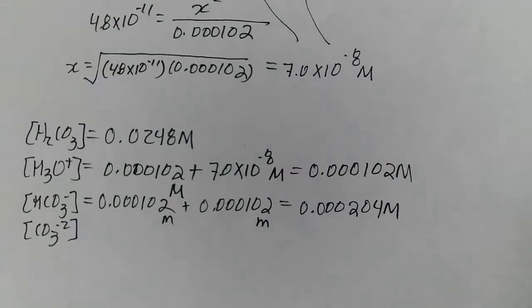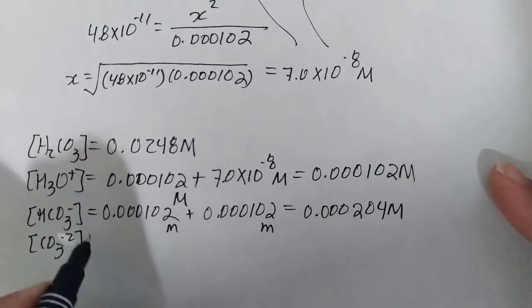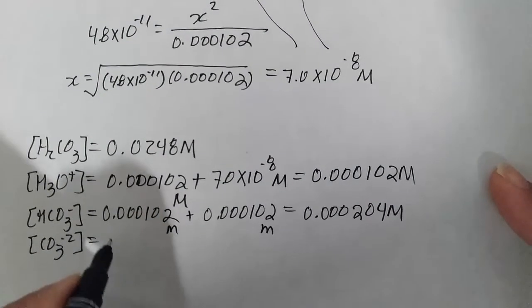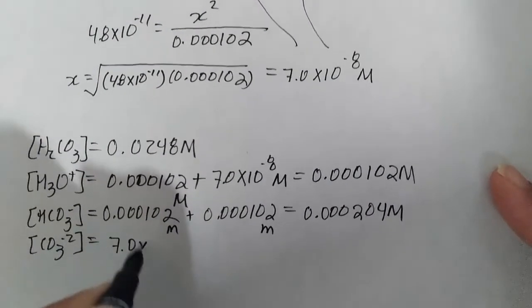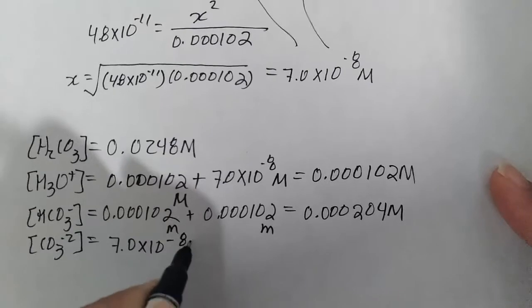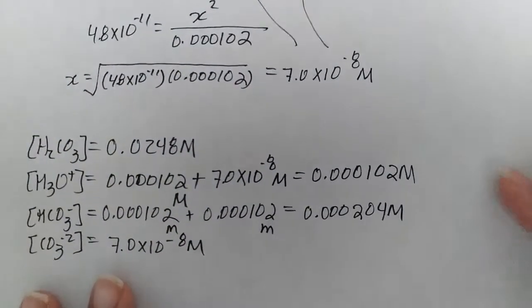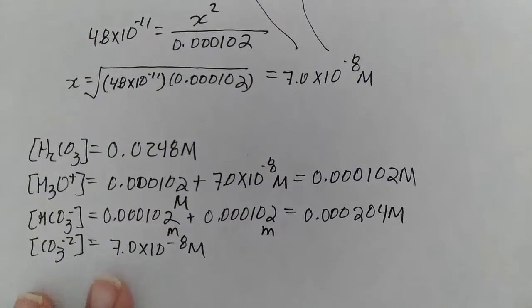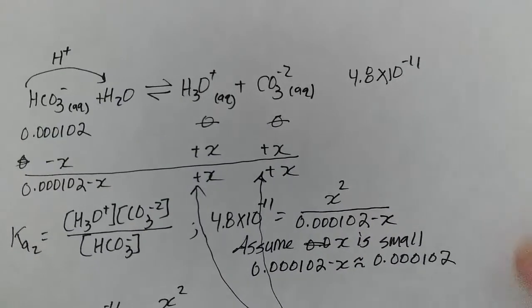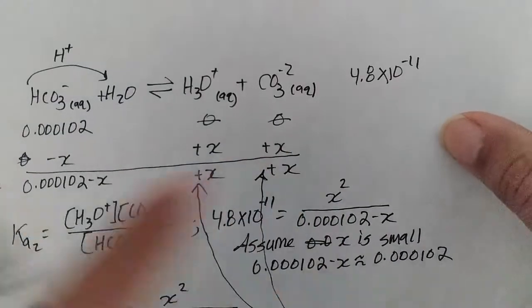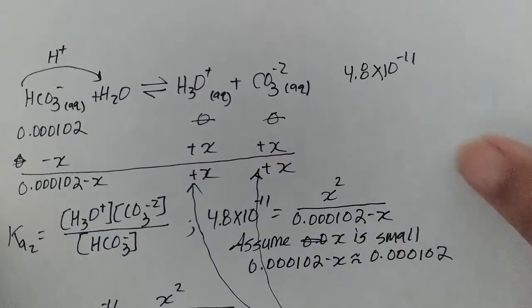And that makes sense. Carbonic acid will have negligible, practically zero amounts of carbonate. And the reason why it has practically negligible amounts of carbonate is because the ionization is so small that yields carbonate, 4.8 × 10^-11.